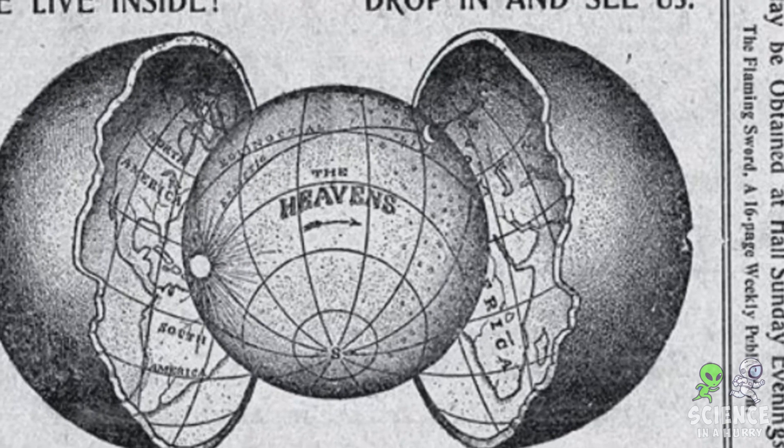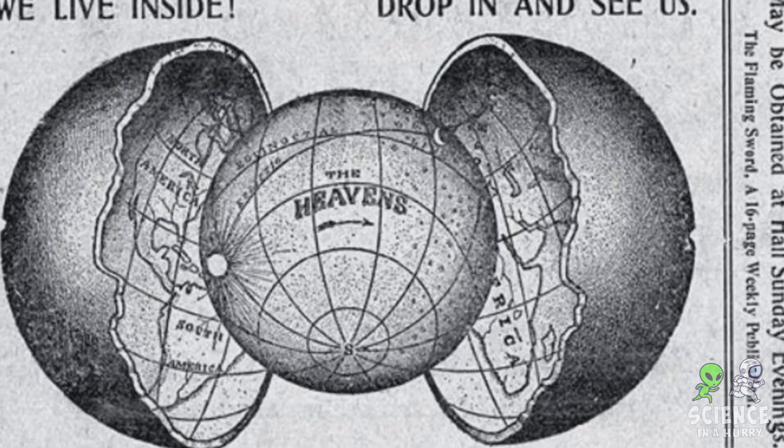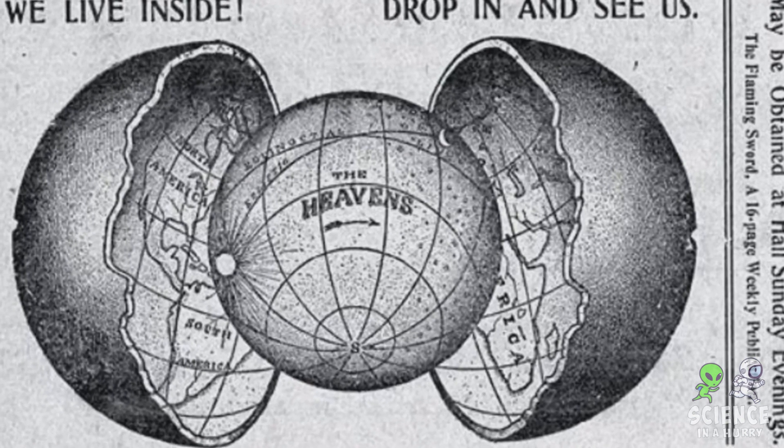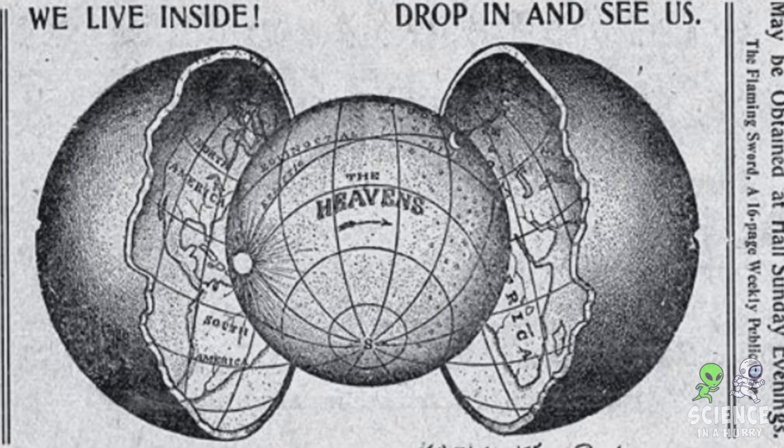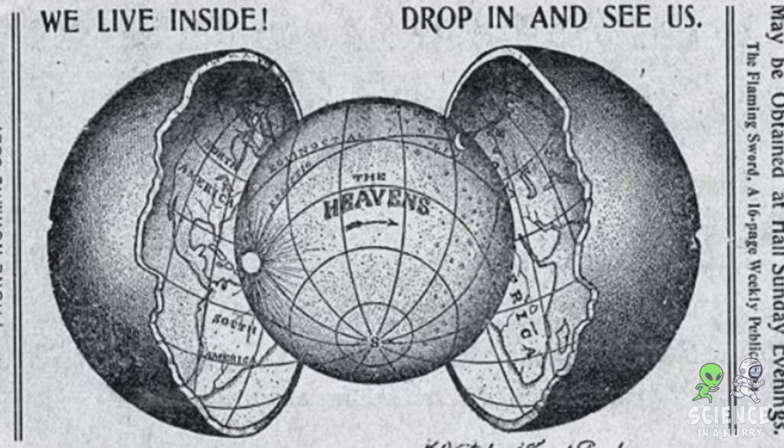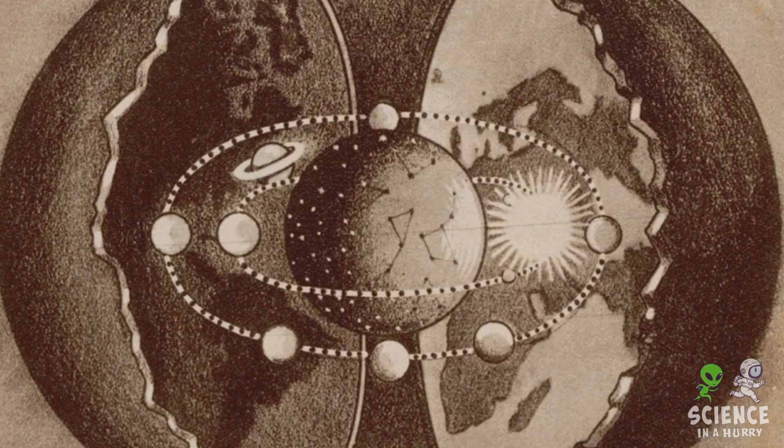This model, he believed, could explain the perplexing compass readings of his time. Halley's hollow Earth theory, while imaginative and compelling, was based on observations and inferences that lacked the sophisticated understanding we have today.